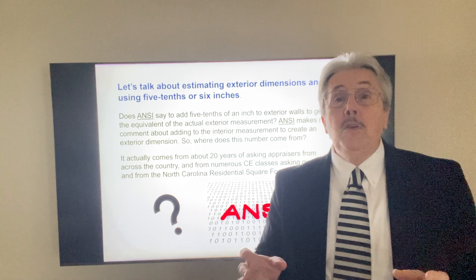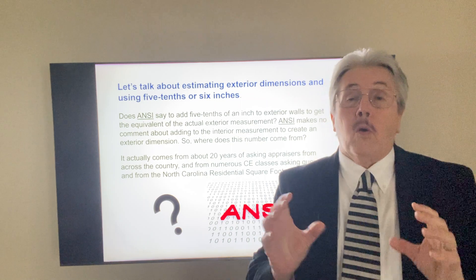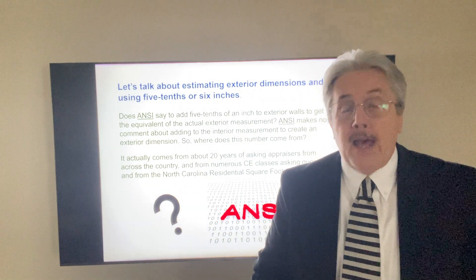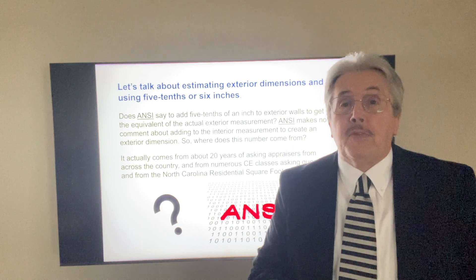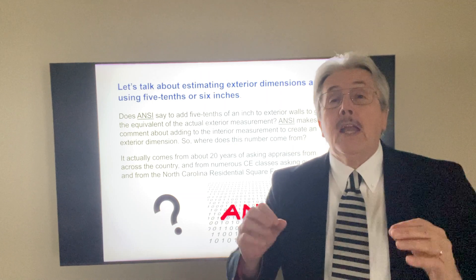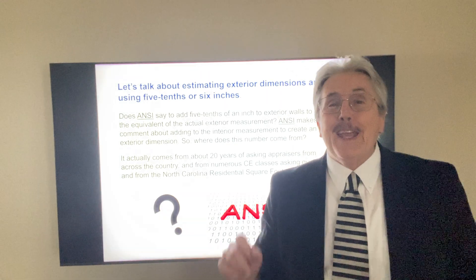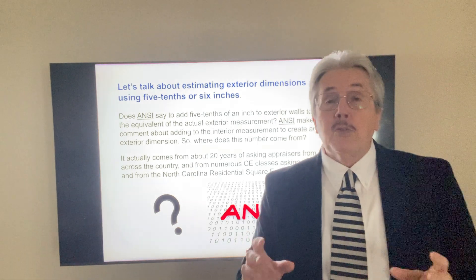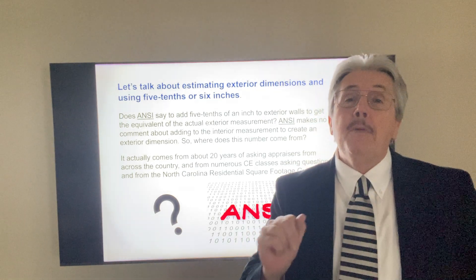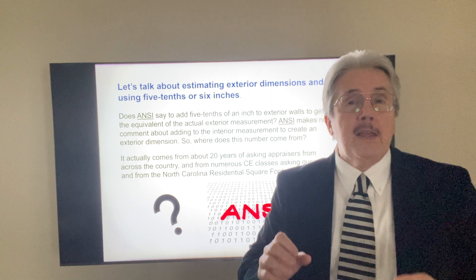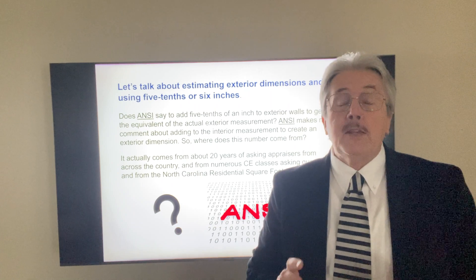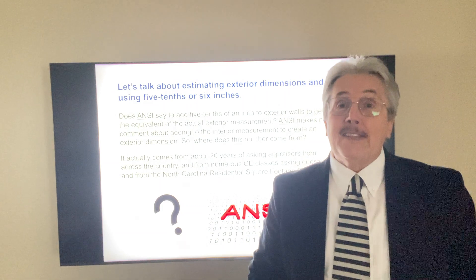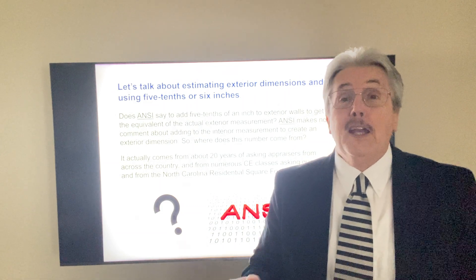If you can open a window or look out the window, and you can tell whether it's vinyl siding, brick veneer, whatever the case may be, you can estimate or guesstimate what the width should be — and that's what a lot of people do. But when people tell me they're following the ANSI rules on that, I know they haven't read all of ANSI, because ANSI doesn't give us a rule on that.